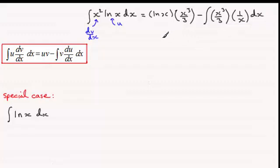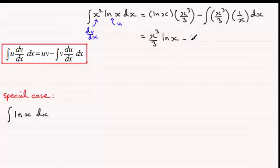So next we need to simplify what we've got here. We've got x cubed over 3 multiplied by the natural log of x — it'll look much better that way round. And then we've got 1 third, which we can pull out of the integral sign. And then we've got x cubed divided by x, which is just x squared, and we integrate that with respect to x.